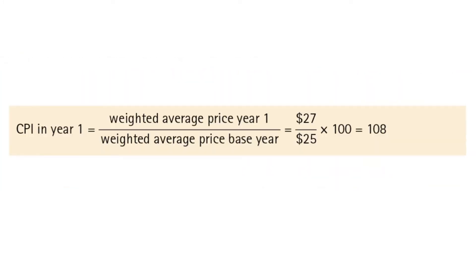Now let's say that the price of the basket was 25 in the base year. Following the example, we see that annual inflation has been eight percent. It must be noted that the basket of goods and services bought, and the weights applied to each item in the basket, may change from year to year as products and spending patterns change.